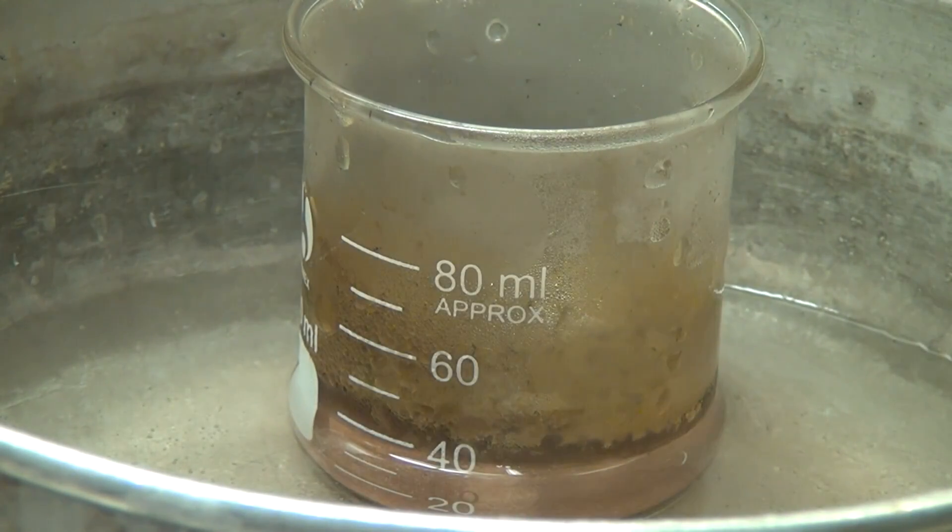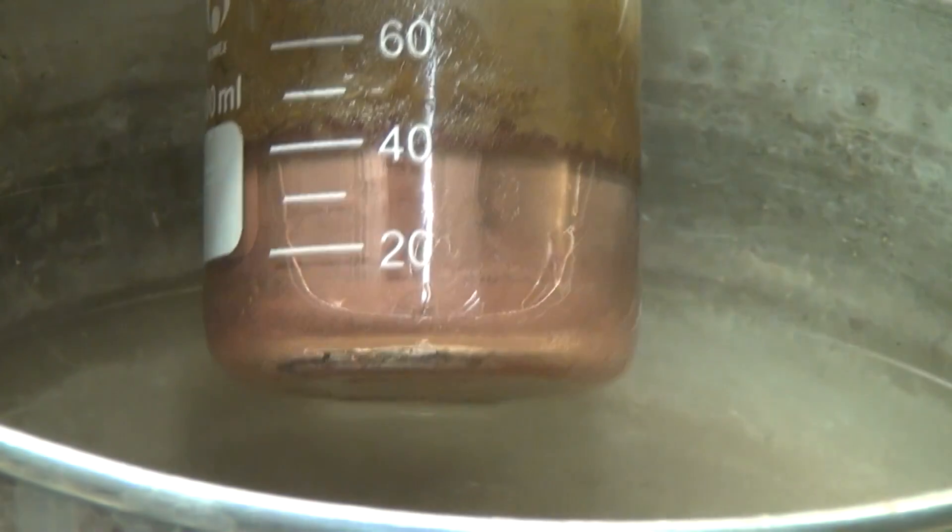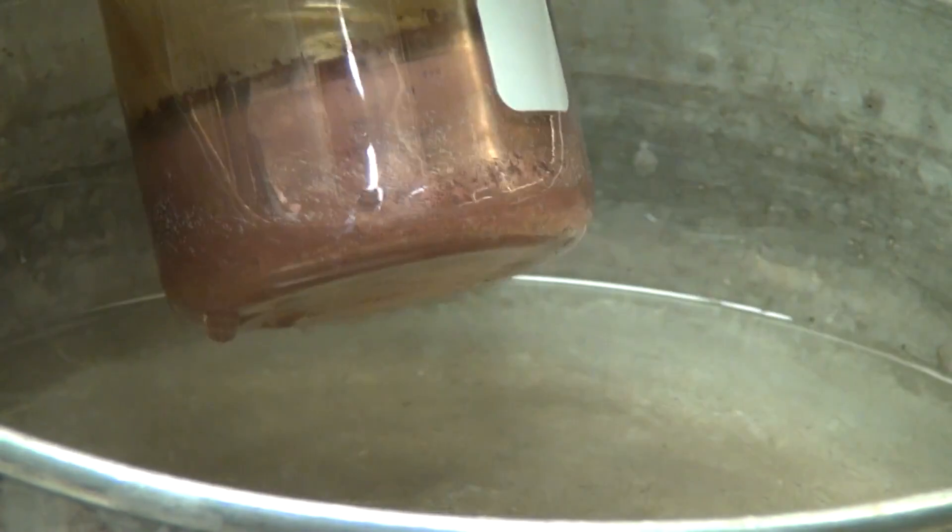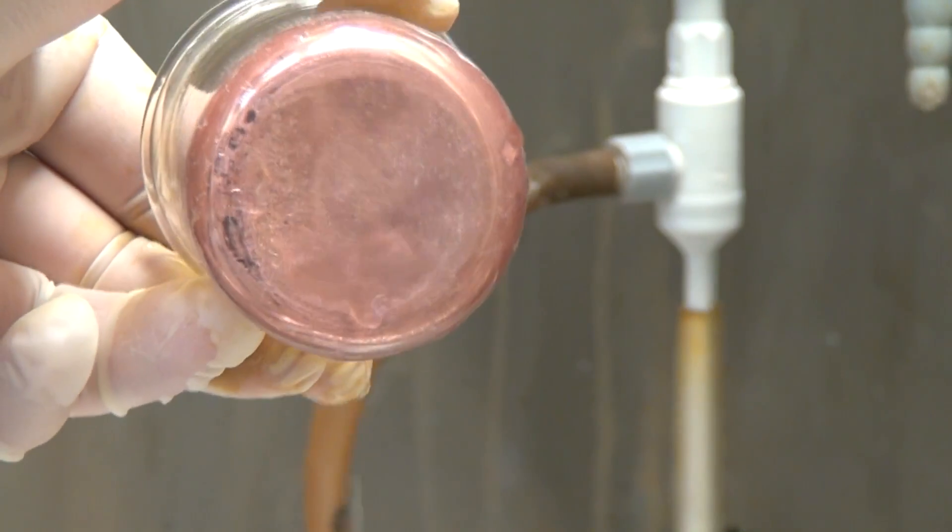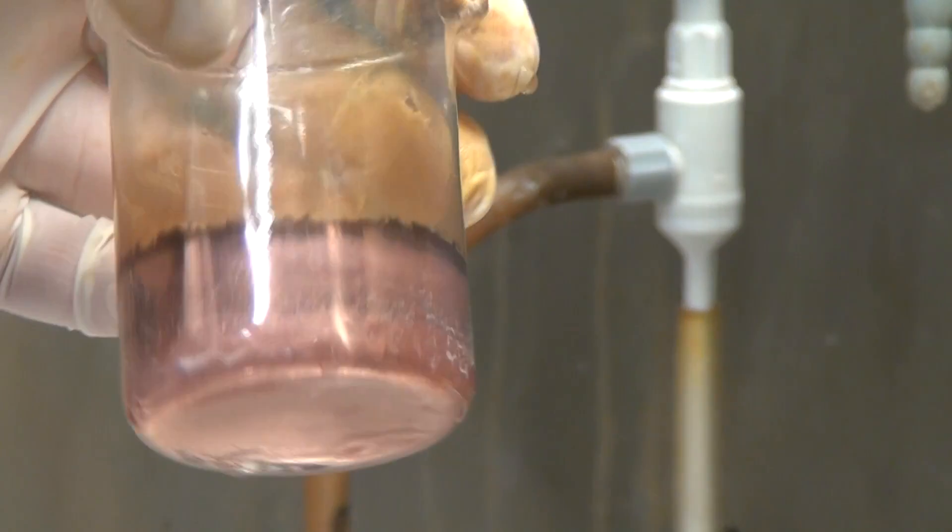After about 15 minutes of heating, a beautiful and shiny coat of metallic copper formed on the walls of the beaker. I poured the liquid off the beaker to better show you the resulting copper mirror. The layer reflects light pretty well.